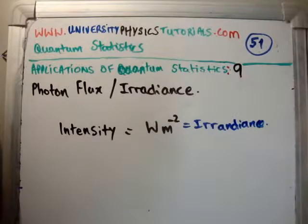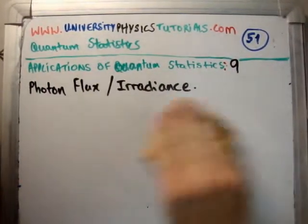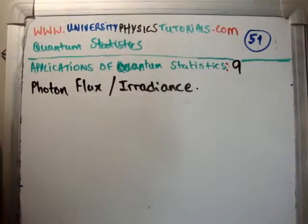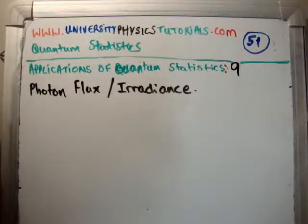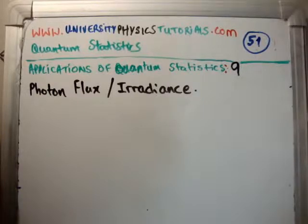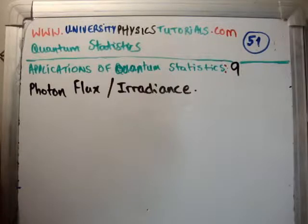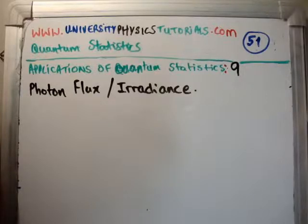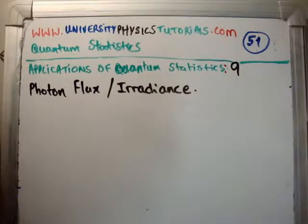How do you calculate watts per meter squared? One way of thinking about it is the amount of photons passing through your area per second, because they carry energy. Another way is just thinking about the flow of energy — the photon flux or the irradiance. So let's think about what we need in order to calculate the photon flux.